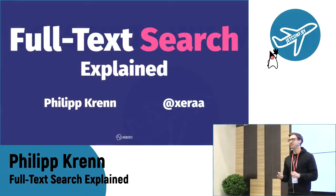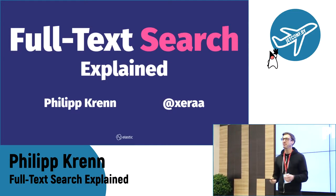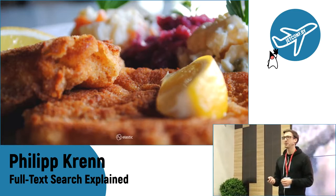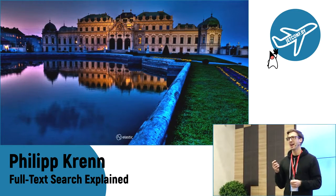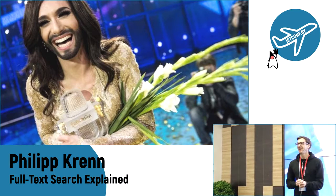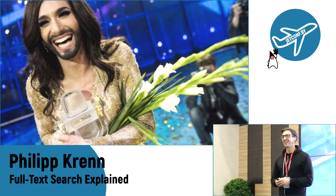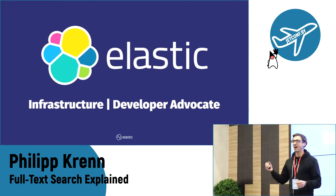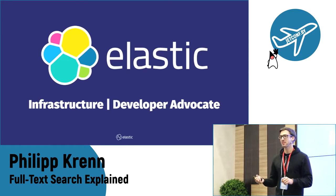Let's get started. I'm Philip, I'm from Vienna. I always describe myself or my city like: Vienna is a city of fatty foods, classical architecture and music, or beautiful women. Everybody knows Conchita — we needed her to win something. I work for Elastic, the company behind Elasticsearch and some other products.